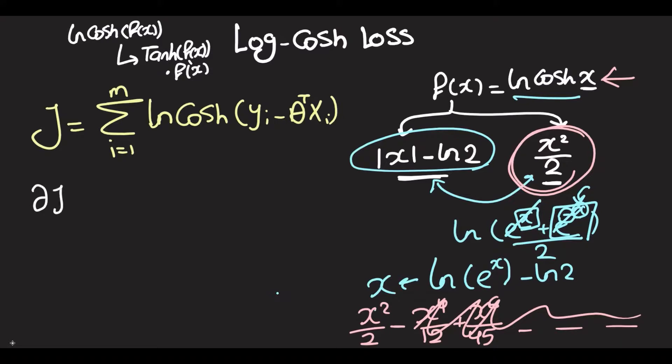So here we have partial J over partial theta is going to be equal to the sum from i equals 1 to the length of our dataset of the hyperbolic tan of yi minus theta transpose xi, multiplied by the derivative of this. And the derivative of that is going to be 0 for this, and we have negative x transpose.